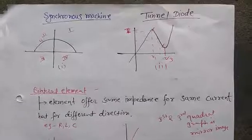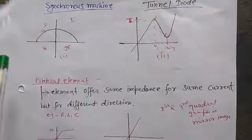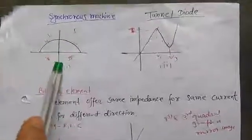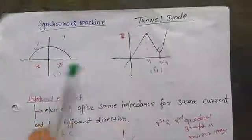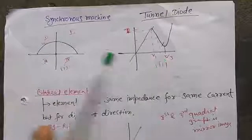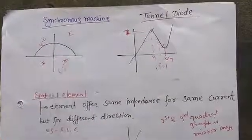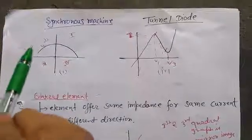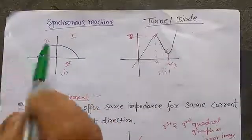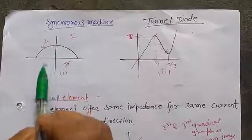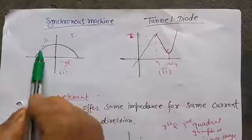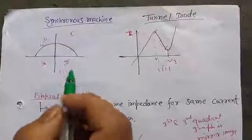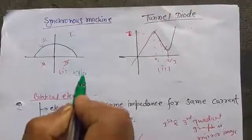In the previous lecture, we studied about active and passive components. I have plotted two graphs, and you have to find out which one is active and which one is passive. As I told you, the graph of an active component always lies in the second quadrant. The graph is in the second quadrant, so this overall element is an active component.